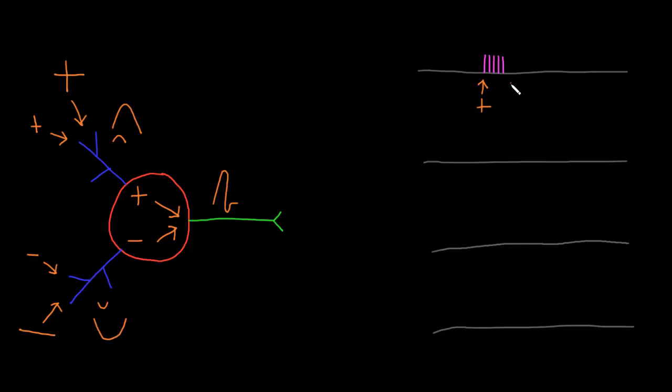This is a very common method used by lots of neurons in the nervous system. For example, motor neurons that synapse on skeletal muscle tend to fire very few or no action potentials until they're excited enough, and then they'll fire a train of action potentials, and then they're quiet again.